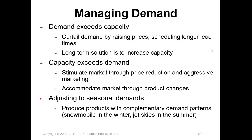If capacity exceeds demand, the market can be stimulated through price reduction and aggressive marketing, since you are producing more than the market needs. The company can also make product changes — adding features or specs — to attract customers. If demand is seasonal, modules can be used to produce products that fit different seasons with little adjustment. For example, a snowmobile in winter and a jet ski in summer share most of the same components with only a few adjustments made between the two products.